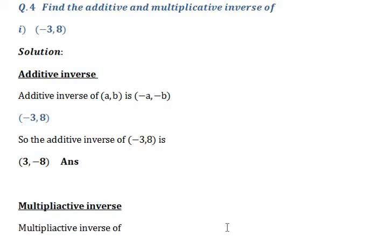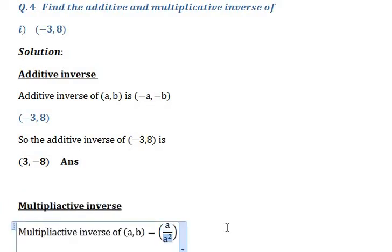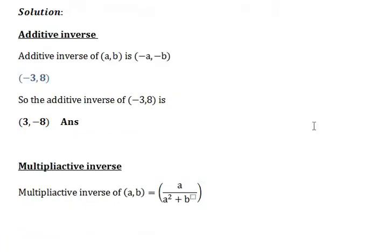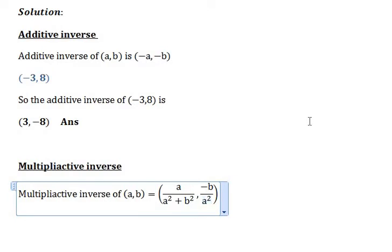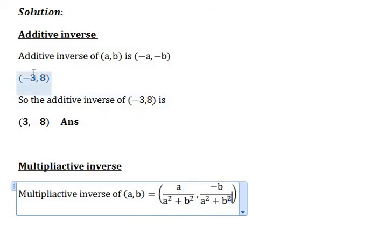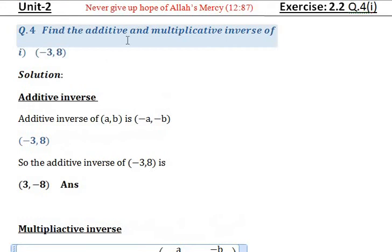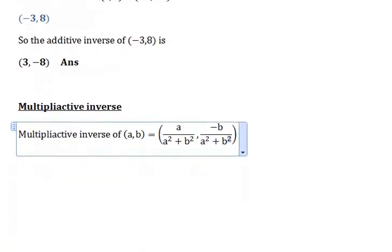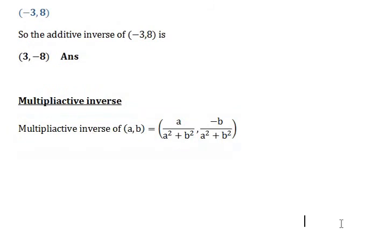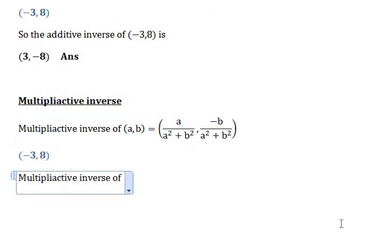Now for multiplicative inverse, we generally use the formula: a over (a squared plus b squared) comma minus b over (a squared plus b squared). Here a is equal to minus 3 and b is equal to 8, because the question is minus 3 comma 8.